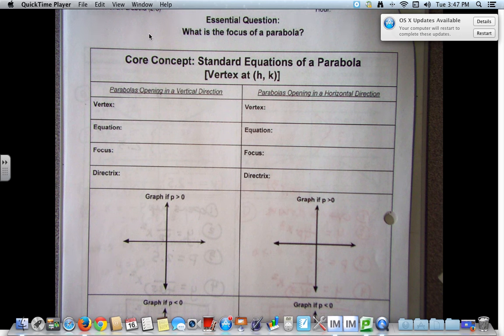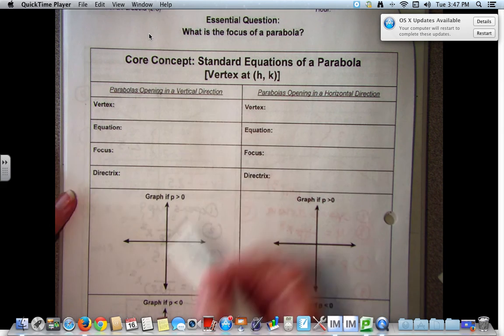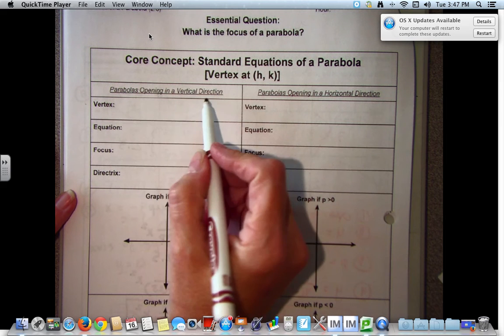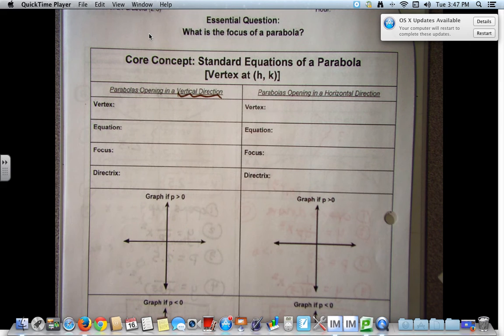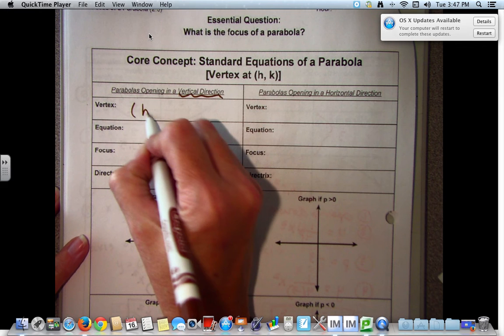Parabola with the vertex being at h and k. Yesterday we looked at everything being at the origin, today we're going to look at the vertex at h and k. Parabola is opening in a vertical direction. Yesterday we looked at up and down. Our vertex is at h and k.